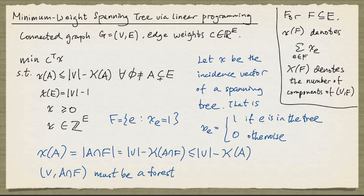So X satisfies all these constraints and is a feasible solution. Now we're going to show the reverse direction: we take X to be a feasible solution and we want to show that X is the incidence vector of a spanning tree.